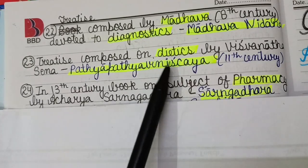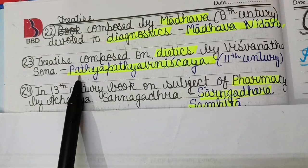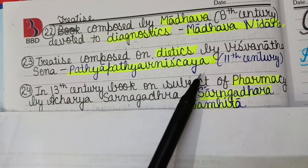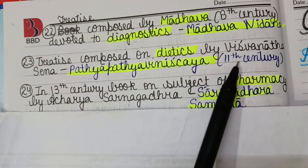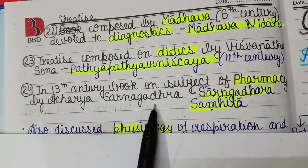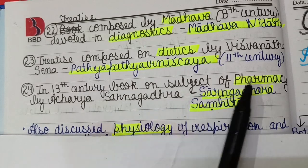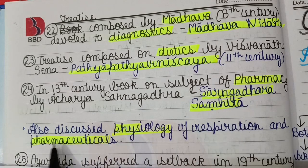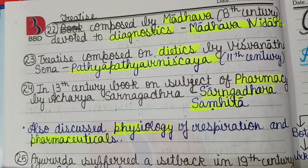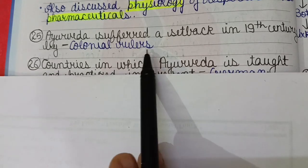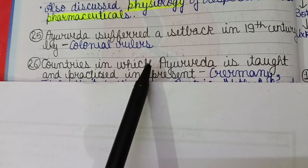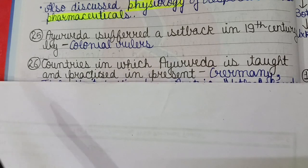A treatise on dietetics composed by Vishnath Sen is called Pathyapathya Vinishchaya, written in the 11th century. In the 13th century, a book on pharmacy was written by Acharya Sarangadhara, known as the Sarangadhara Samhita, which also discusses the physiology of respiration and pharmaceuticals. Ayurveda suffered a setback in the 19th century when colonial rulers came to India and undermined the Ayurvedic system.